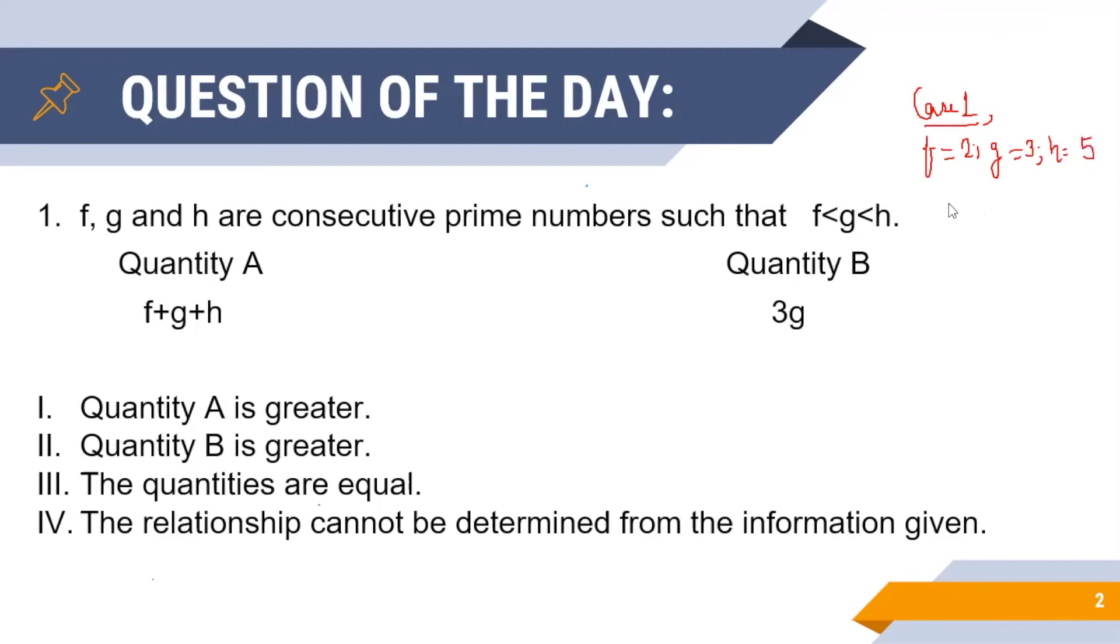So in this case, A must be equal to 2 plus 3 plus 5 that is 10, while B is equal to 3 times 3 that is 9. Hence in case 1 we see that A is greater than B.